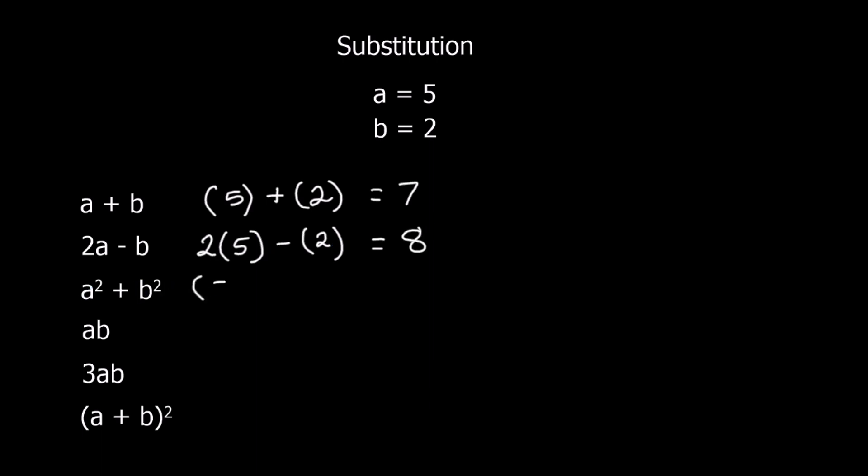Here I've got A squared, 5 squared, plus B squared, which is 2. So 5 squared plus 2 squared. 5 times 5 is 25, 2 times 2 is 4, so that's 29.